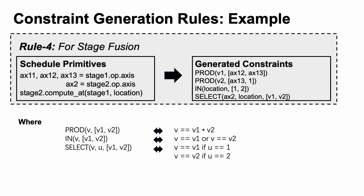Here is one of our proposed constraint generation rules. When we fuse a computation stage called stage 2 into stage 1, the loop length of stage 2 is determined by the compute location. This rule describes that the length of loop x2 can have two candidate values, and is finally determined by a schedule parameter called location.